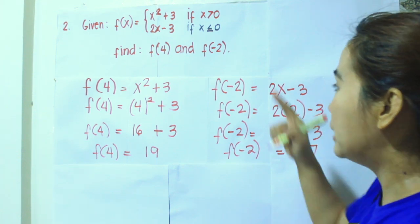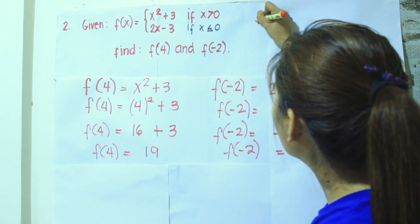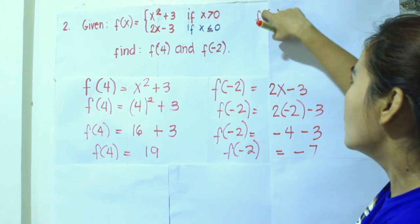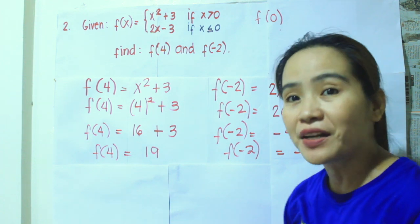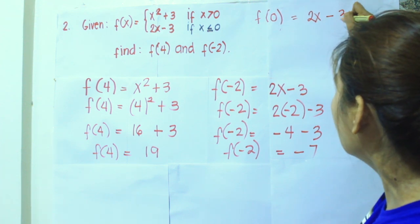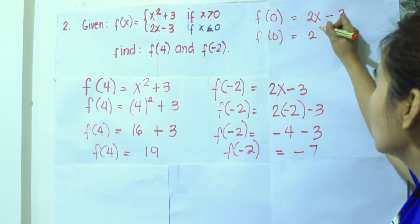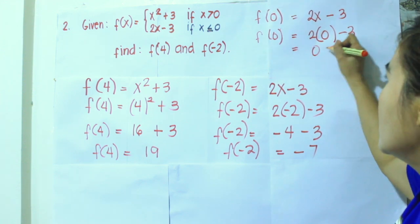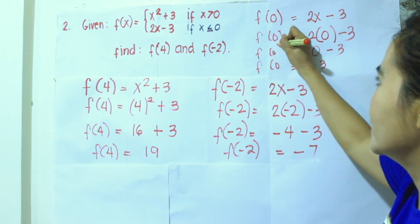What if we also evaluate f of 0? Since 0 is less than or equal to 0, we will be using 2x minus 3. So f of 0 is equal to 2 times 0 minus 3. Since 2 times 0 is 0, we get 0 minus 3, which equals negative 3. So that is f of 0.